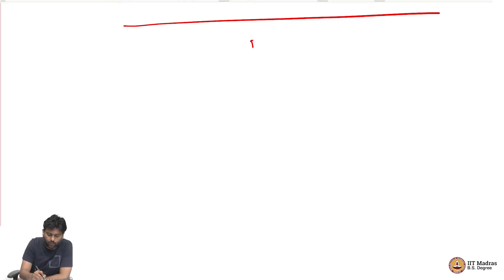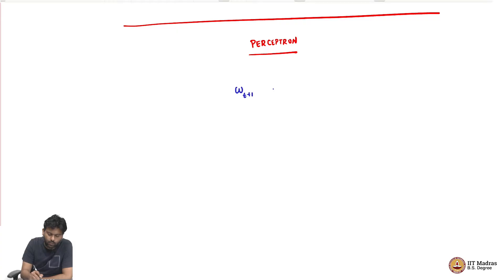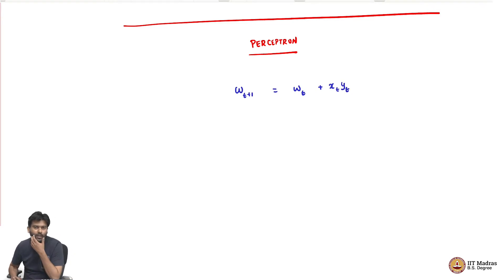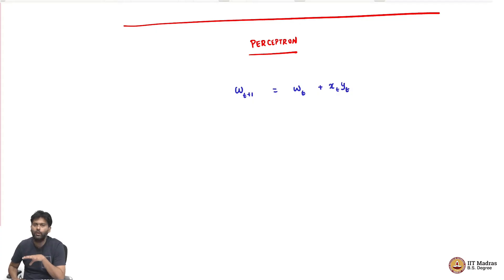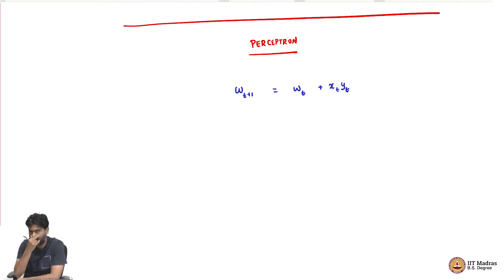So, perceptron - I will point out what perceptron does. If you remember what perceptron was doing, perceptron was doing this update rule: W(t+1) was W(t) plus x. Let us call the point we get x_t, y_t at the t-th iteration, and let us say we make a mistake - that is the update we did. Now this update rule should remind you of a very standard gradient descent based update rule.